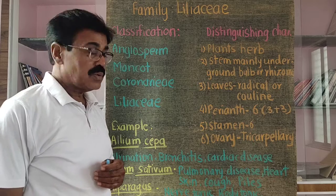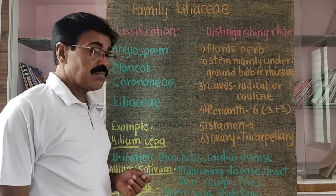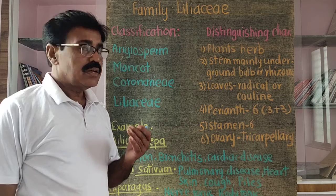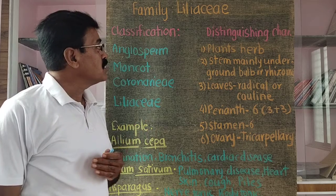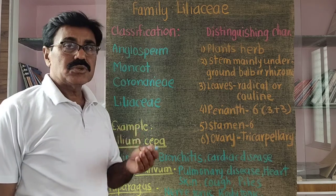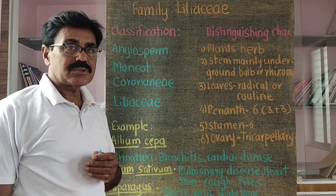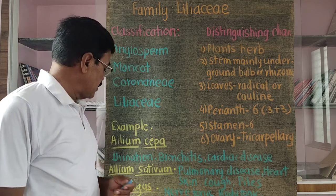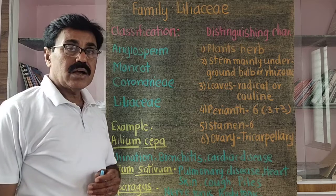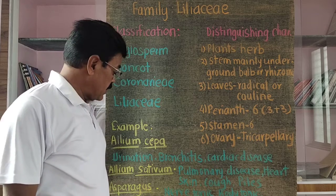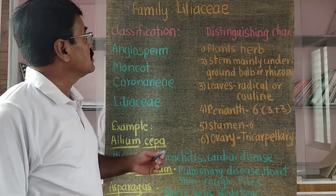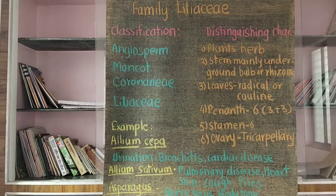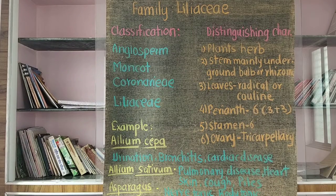Aloe vera is also one important plant of this family. It is used in a number of skin diseases and in cosmetic industries. Aloe vera is also used for stomach aches and stomach troubles. It is also called Aloe barbadensis. This concludes the overview of family Liliaceae.